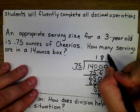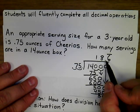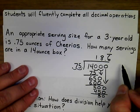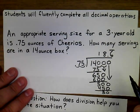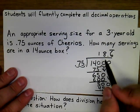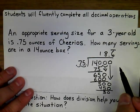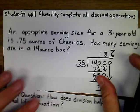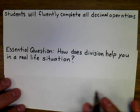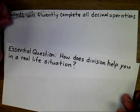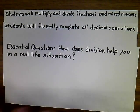Because of the repeating pattern, we draw a repeat bar above the six to show the answer is 18.6 repeating. In fraction form, that's 18 and two-thirds servings. For our purposes, we can definitely get 18 servings out of the 14-ounce box. Hopefully students now recognize how division helps in real-life situations, can fluently complete all decimal operations, and are able to multiply and divide fractions with mixed numbers.